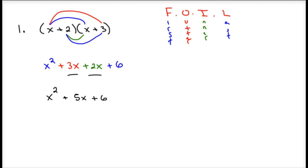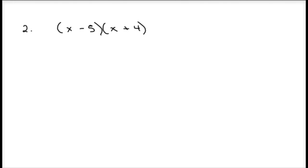FOIL is most commonly used. You could also look at this as taking the first term and multiplying it by both terms in the second binomial, then taking the second term in the first binomial and multiplying it by both terms in the second quantity as well.